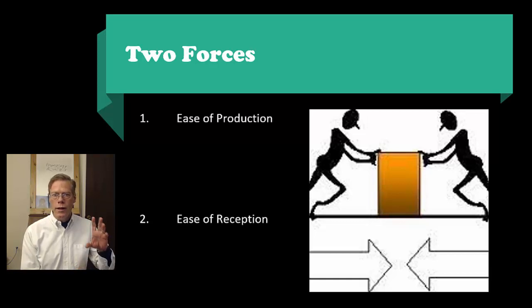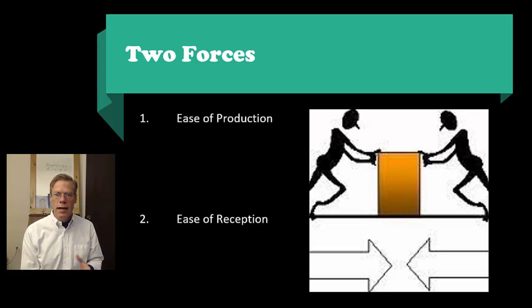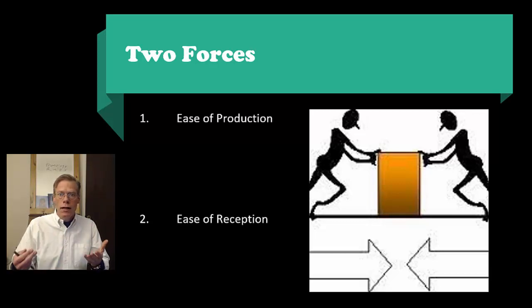At a higher level, we can group the processes into two main types. There are two forces at work in language in general, and this is not specific to phonology — it exists all the way across grammar. Languages seem to operate with economy: the speaker doesn't want to work any harder than they need to, and the hearer doesn't want to work any harder than they have to. Those two forces can be in opposition, but together they lead to the amazing communication system that is language.